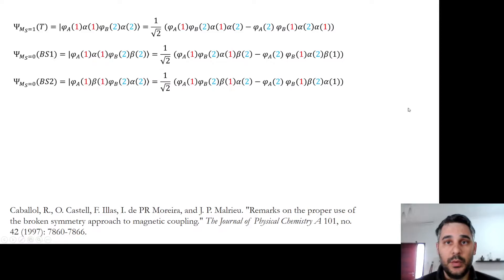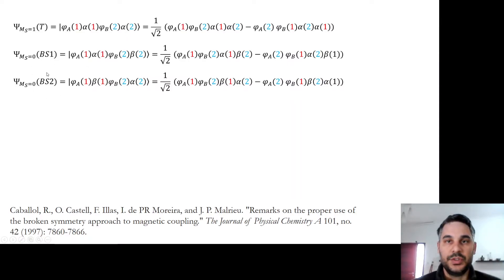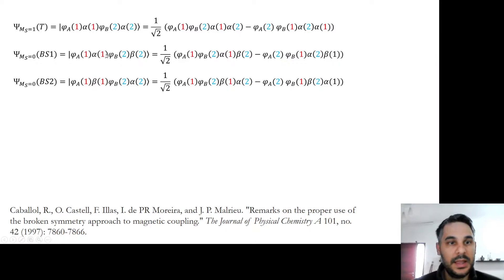In the previous video we saw that the ms equals 1 component of the triplet energy could be written as a single Slater determinant with spin alpha on electron 1 and spin alpha on electron 2. And there were two broken symmetry solutions which have ms equals 0 but belong neither to the singlet nor the triplet — they have one electron with spin alpha and the other electron with spin beta.